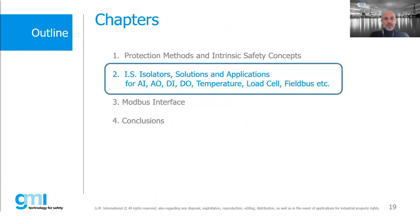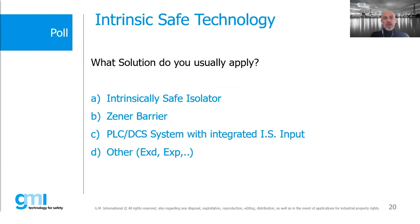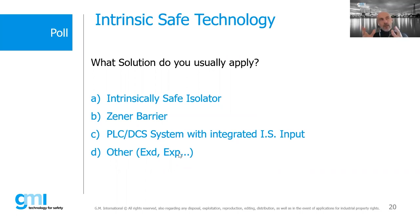We now want to go module by module, technology by technology, looking at how and where you can use different isolation modules. But first, another poll: what kind of technology do you use? Intrinsically safe isolators, Zener barriers (the older technology), PLC/DCS systems with integrated IS inputs — some major DCS/PLC manufacturers already offer modules with intrinsically safe inputs — or other technologies like Ex d or Ex p, which are not part of today's presentation?